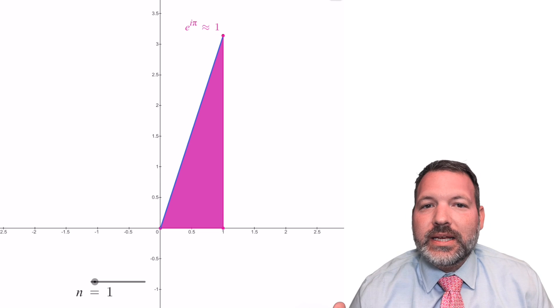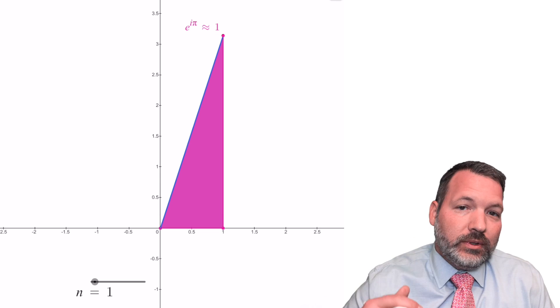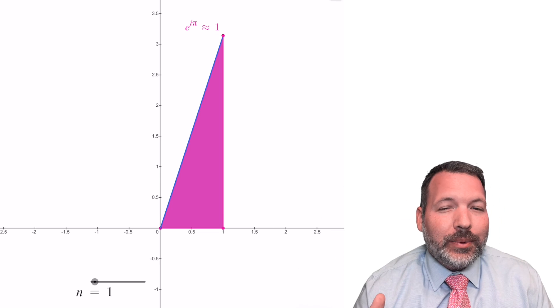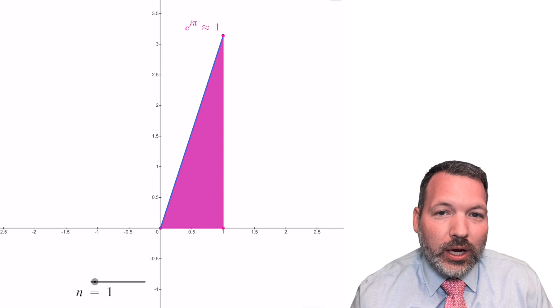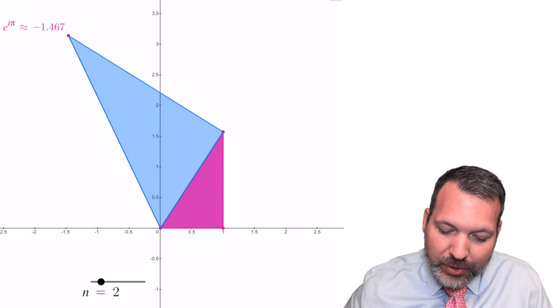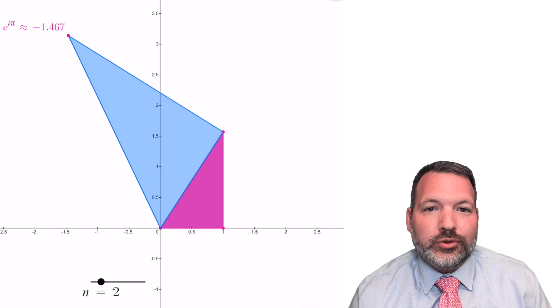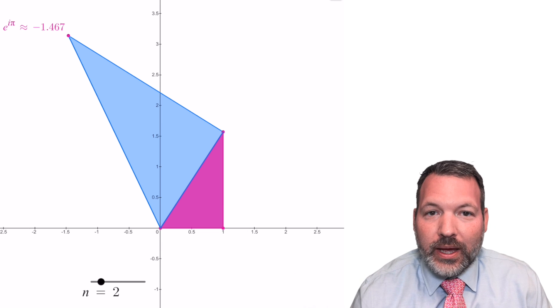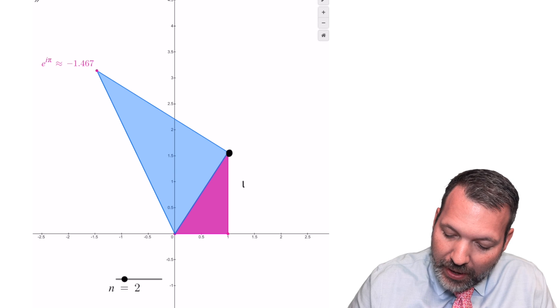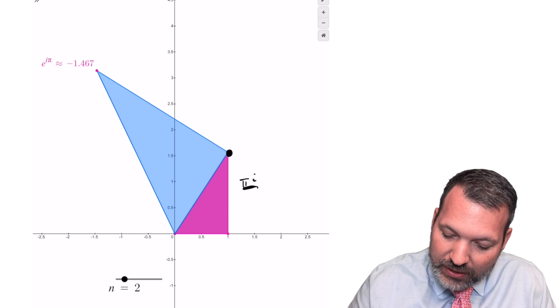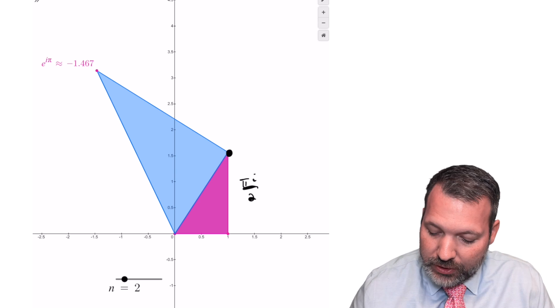Now what I'm going to do next is I'm going to take the height of that triangle, again, the height being the imaginary part, and I'm going to make it a little bit smaller. I'm actually going to take a smaller and smaller chunk of the pi i, and then I'm going to represent another similar triangle drawn on top of that previous triangle. So for this picture where n equals two, I have divided my height into two, and so the height now is pi i over two.